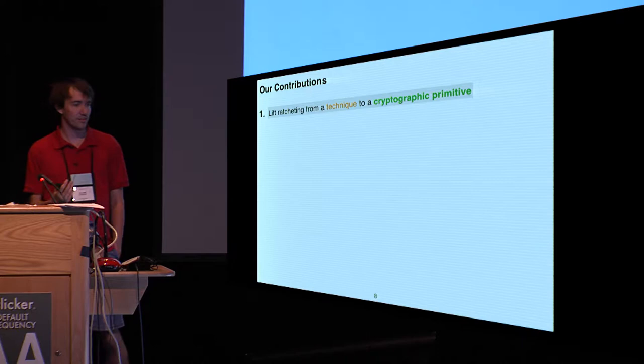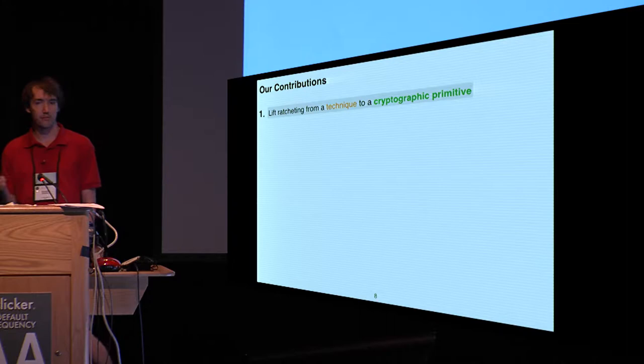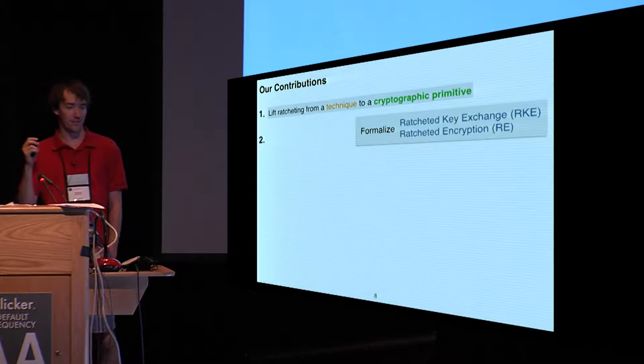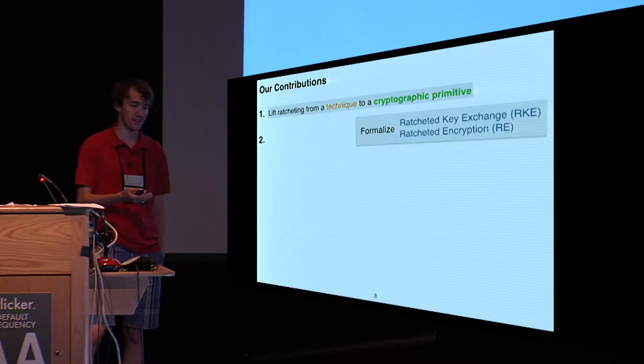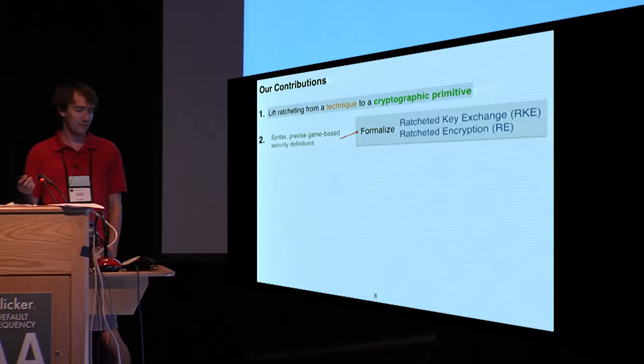So I can talk about what we try to do in our work now. First thing, we tried to lift ratcheting from just being a technique used in practice to a distinct cryptographic primitive. And in fact, we formalized two versions of the primitive. First, we have ratcheted key exchange, which solely deals with the updating of the keys over time. And then ratcheted encryption deals with this updating of keys over time, in addition to processing encrypted data with the keys.